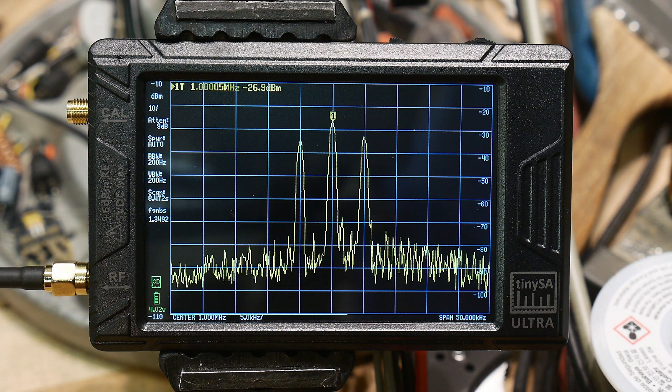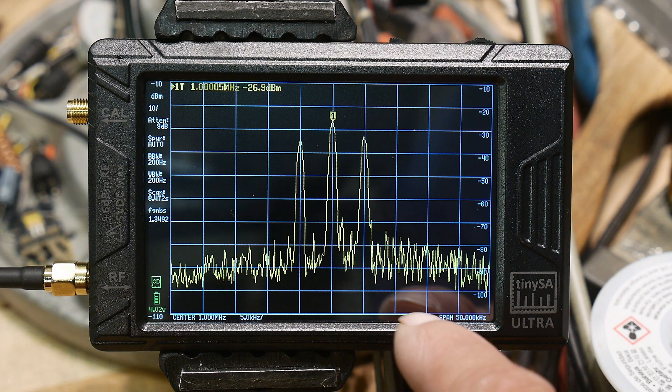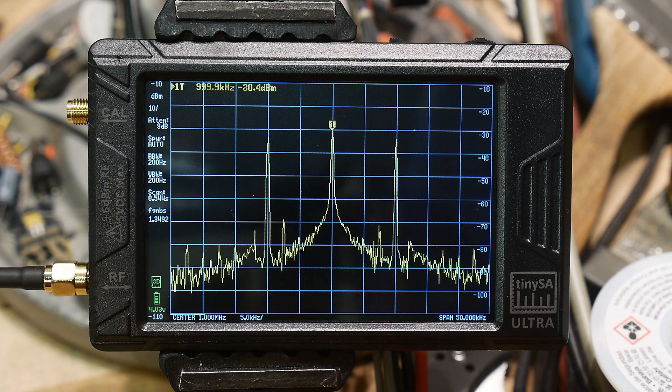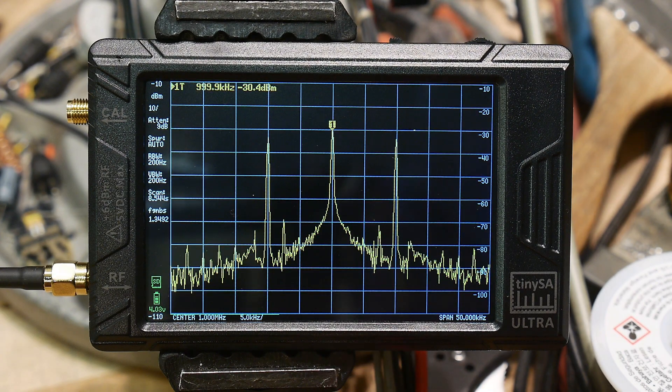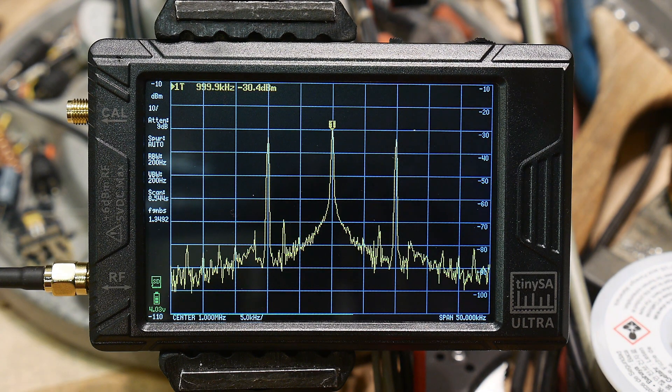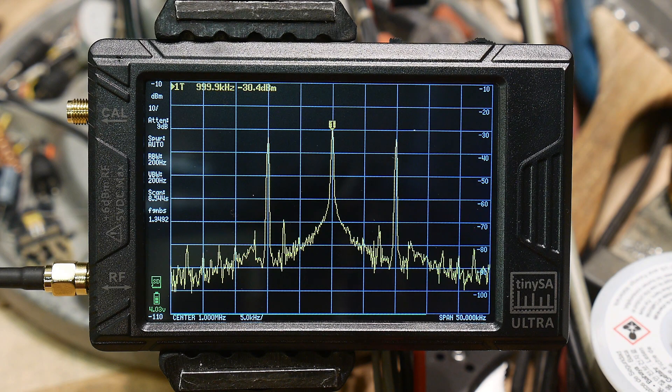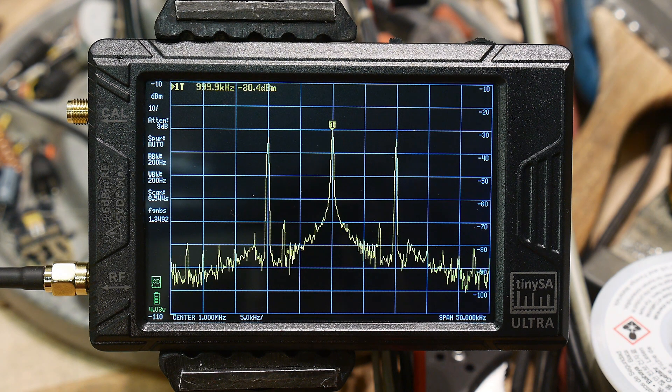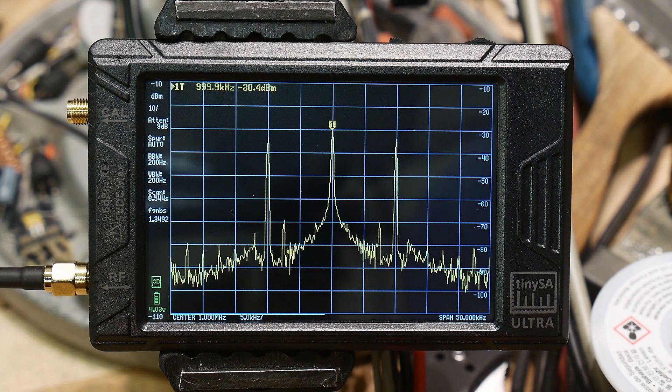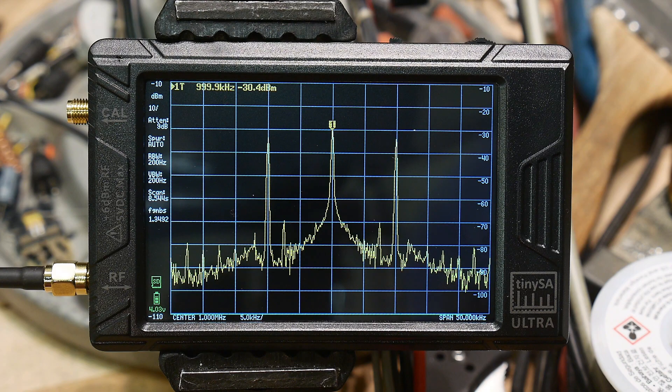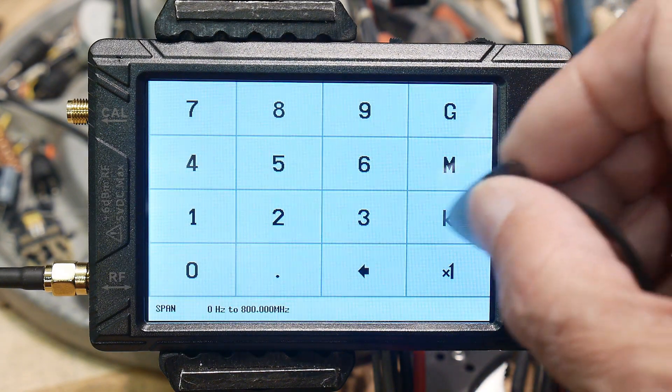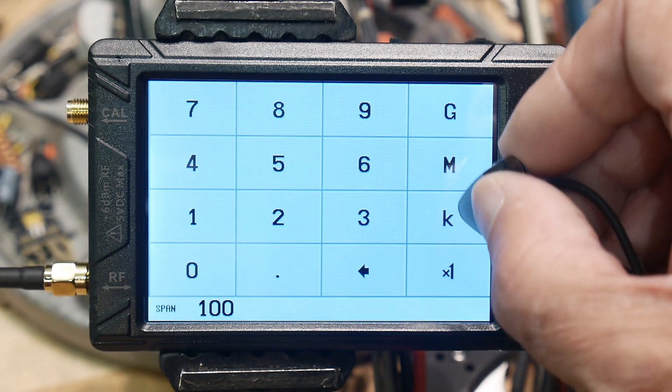Let's zoom in a little bit - span of 50 kilohertz. Now you can see at the very bottom the sweep speed. It's very slow. We're at 200 hertz resolution bandwidth now. This is as good as it goes.